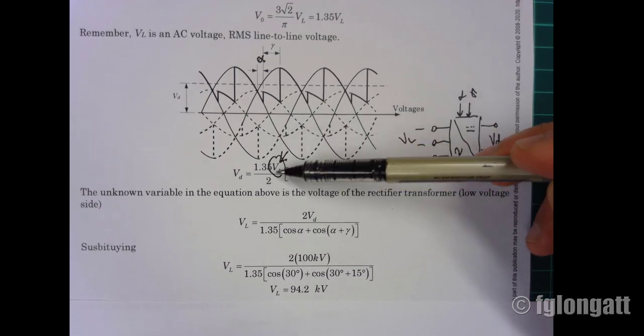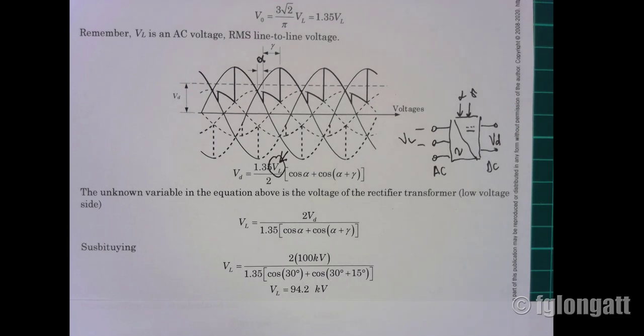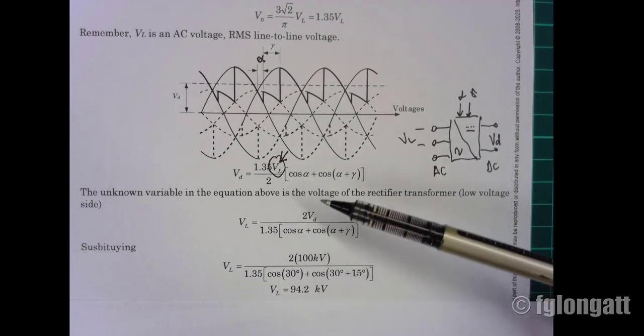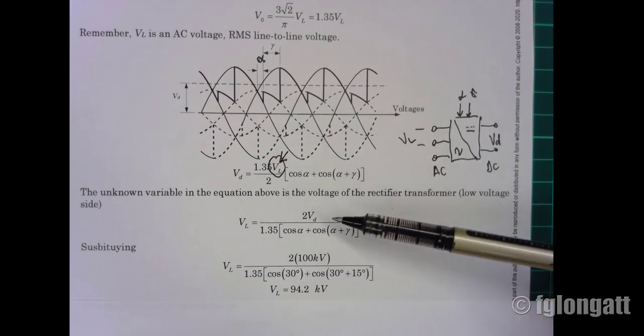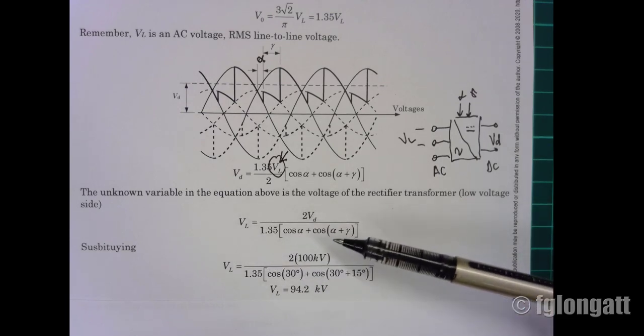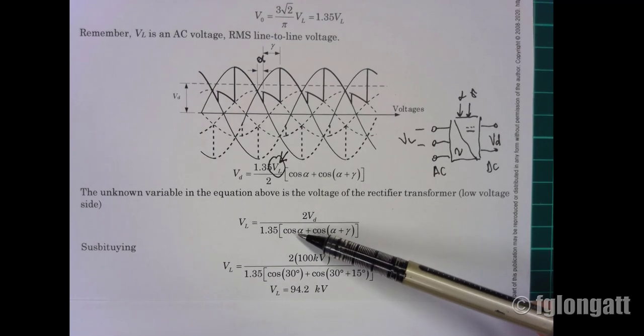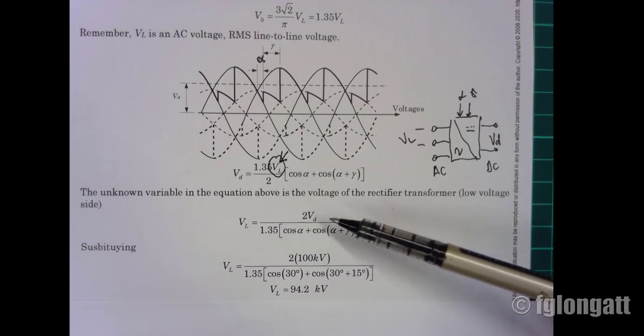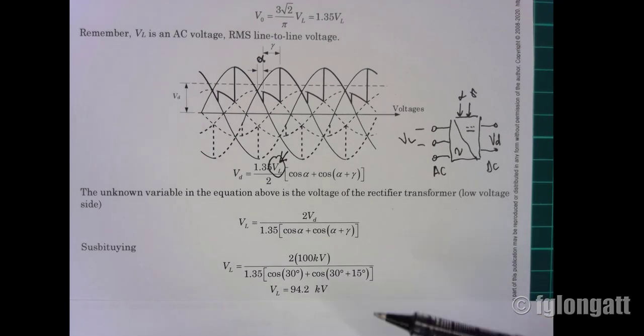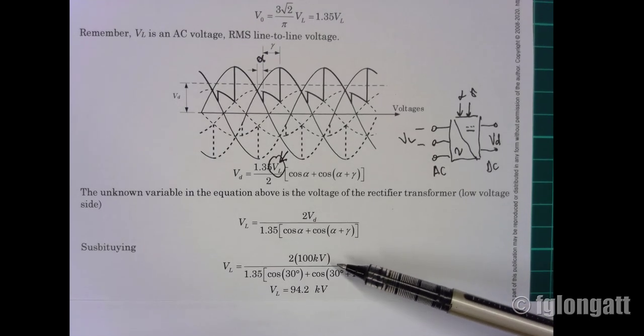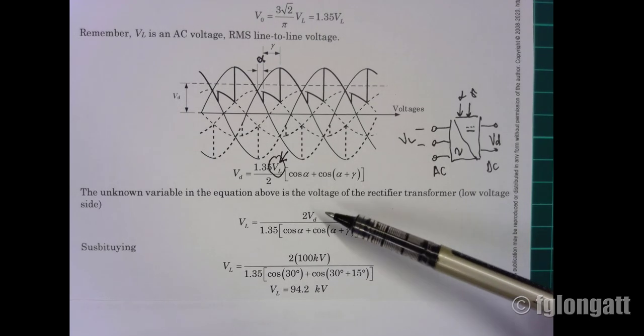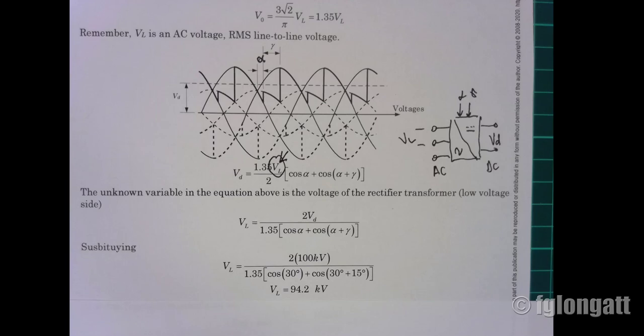Extracting that equation is something very simple. We can obtain this equation, and from there it's job done because what we need to do is substitute alpha, gamma, and VD. Remember that VD is coming from the 100 kV DC that we need to supply.